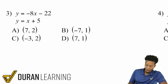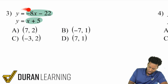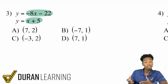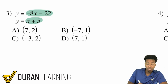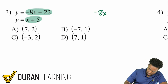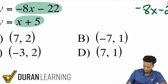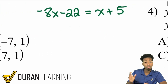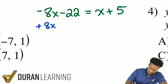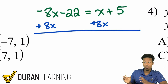Number three: we have y equals negative 8x minus 22 and y equals x plus 5. Both say y equals something, so set the two expressions equal: negative 8x minus 22 equals x plus 5. Looking at the answer choices, x will be one of: positive 7, negative 7, negative 3, or 7. Let's solve — add 8x to both sides.